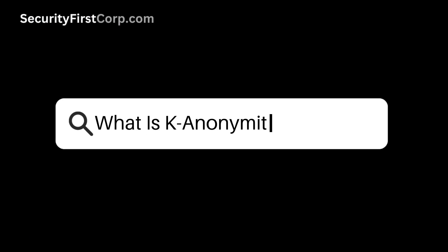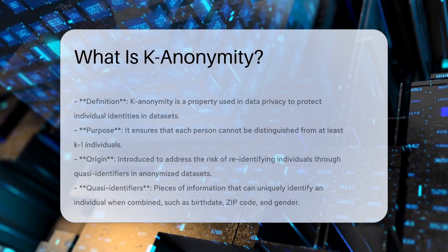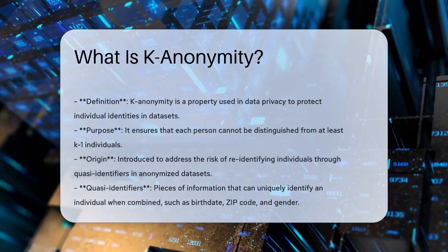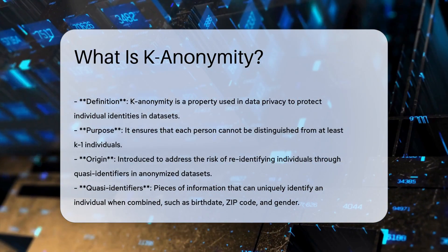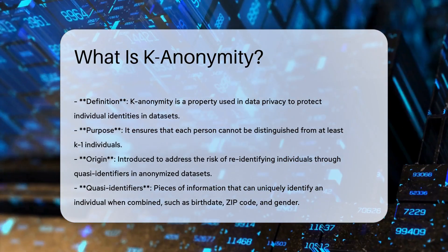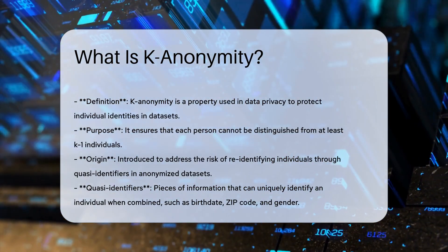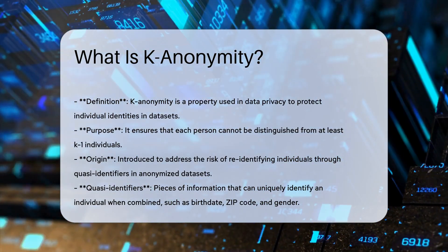What is K-anonymity? K-anonymity is a property used in data privacy to protect individual identities in data sets. It ensures that each person cannot be distinguished from at least K-1 individuals.